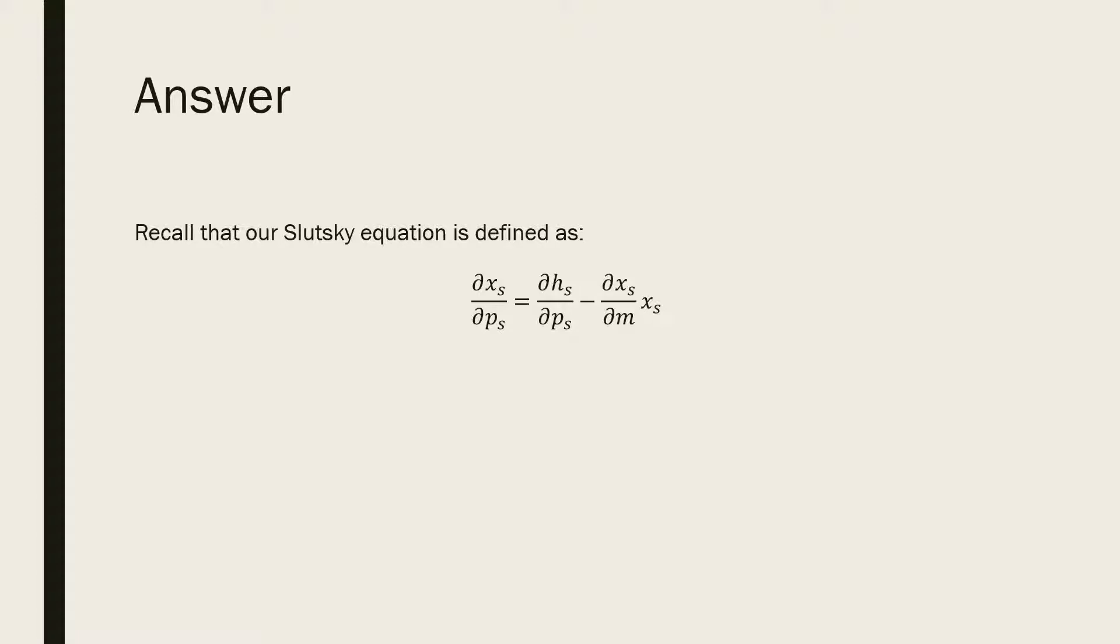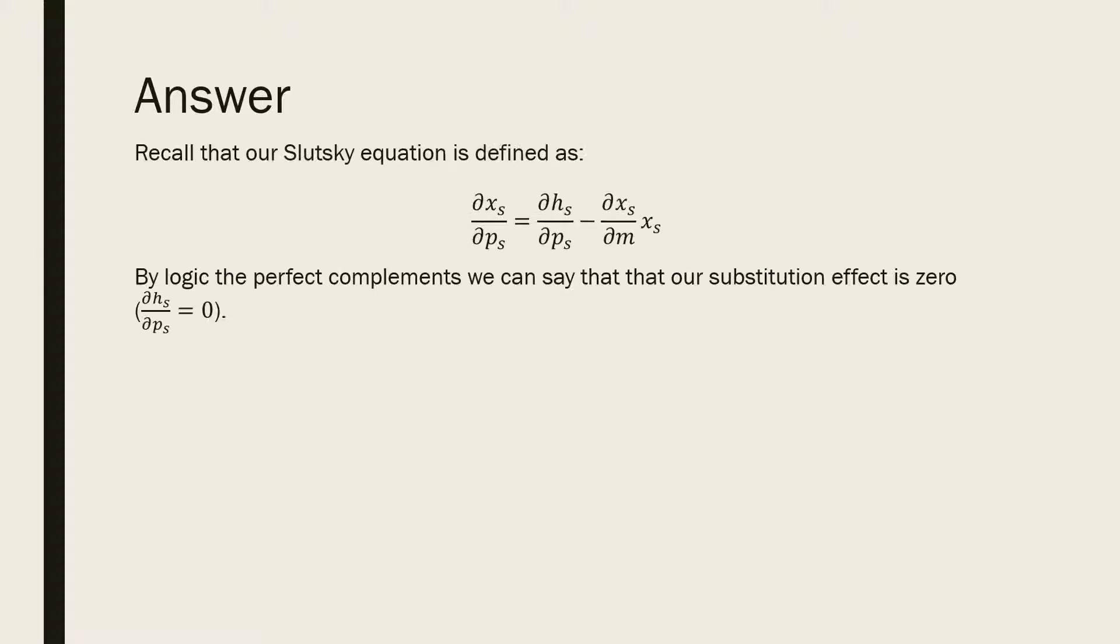Recall that our Slutsky equation is defined as the following. By logic of perfect complements, we can say that our substitution effect is going to be zero, which is the partial derivative of our Hicksian demand for skis with respect to the price of skis is going to equal zero.